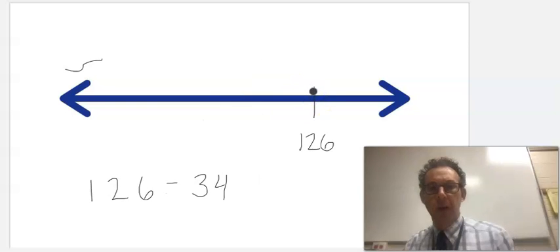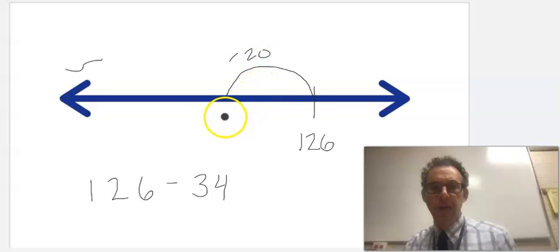And for problems where I need to regroup, like 126 minus 34, I can make a jump of 20 to go back because I know in my head how to take away 20 from 126. That's just 106.